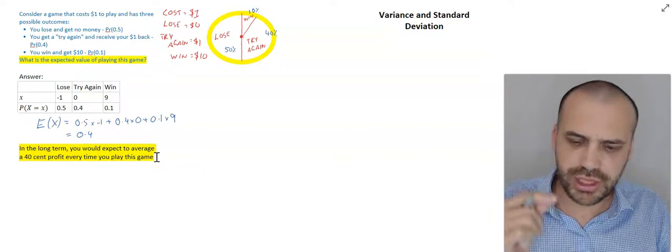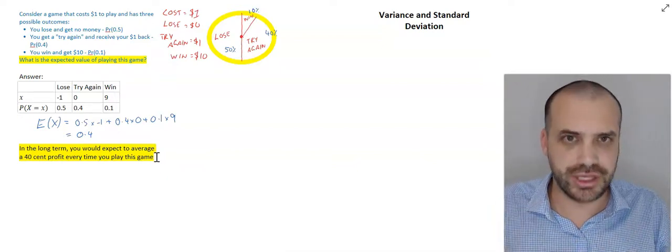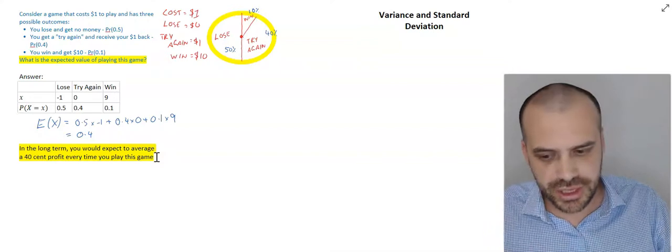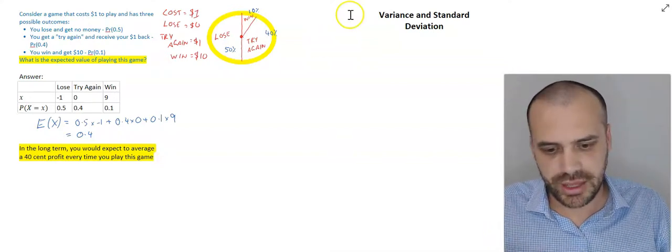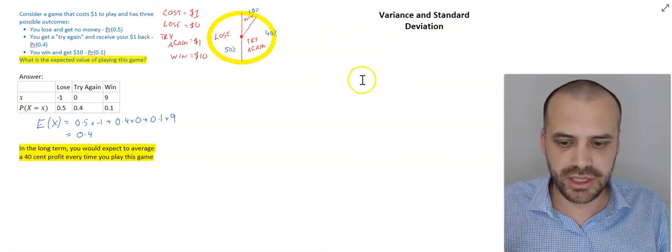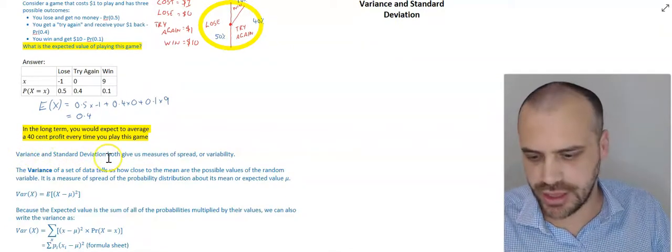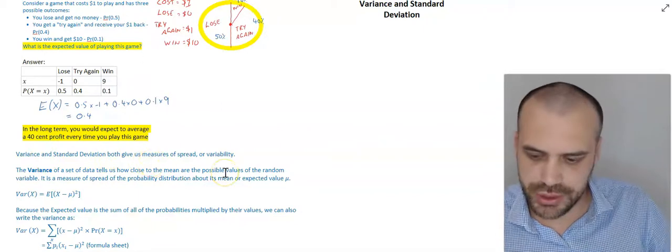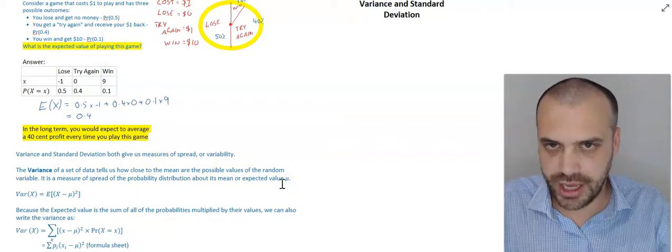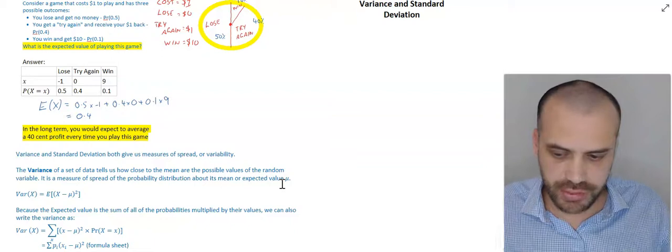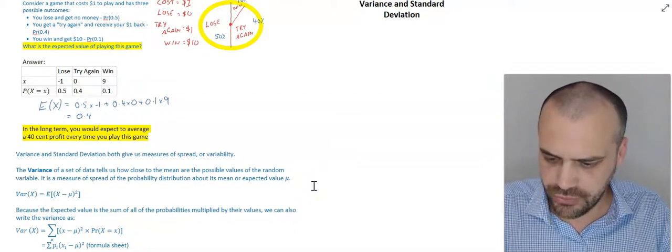So, what I'm really talking about is risk. How risky is this game? And the variance and standard deviation can tell us how risky this game is. Here's some information on variance and standard deviation. It's a measure of spread. And we can talk about how spread out they are around the mean.